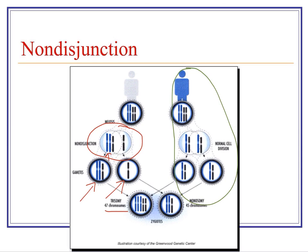A missing copy is called monosomy, meaning you only have one copy of a chromosome. In that case, an individual human would end up with 45 chromosomes. Most of the time when nondisjunction occurs, the offspring is not viable and cannot live. It might result in something like a miscarriage.